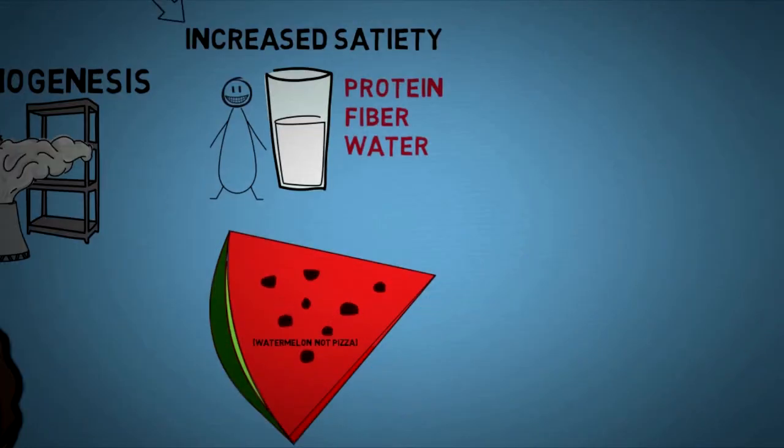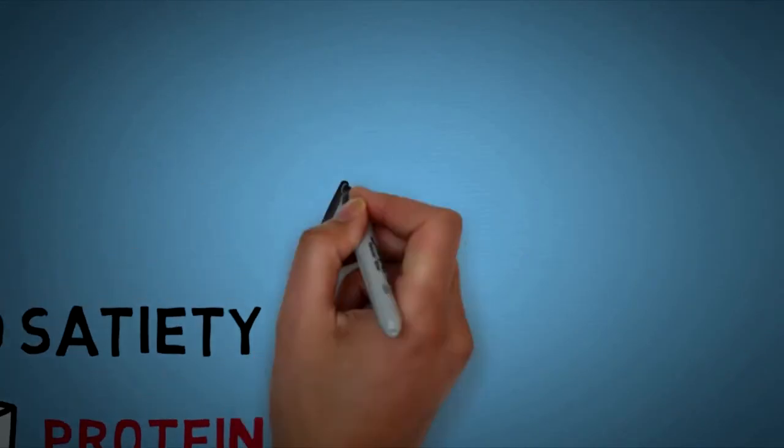An example for a food with a high amount of water is this perfectly drawn watermelon. You should still not lose sight on protein even while focusing on an increased satiety diet. Here's why.